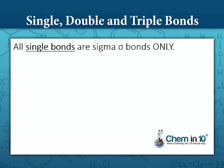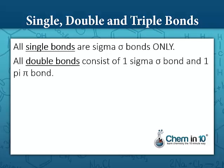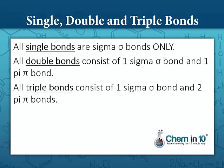All single bonds are sigma bonds only. All double bonds consist of one sigma bond and one pi bond. And all triple bonds consist of one sigma bond and two pi bonds.